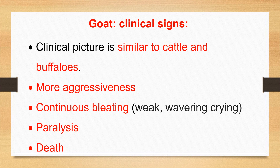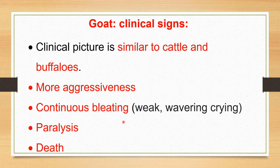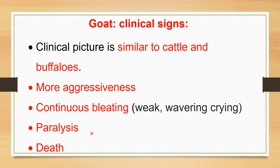Clinical signs of rabies in goat: the clinical picture in goat is also similar to cattle, buffalo, and sheep rabies cases. However, the goat becomes more aggressive than cattle, buffaloes, and sheep — it is more aggressive and more sensitive. The goat continuously bleats. Bleating is a weak, low-pitched, wavering, and continuous cry — it is the voice of the goat. There is paralysis starting from the hind part, ascending through the central nervous system, and death of the goat.